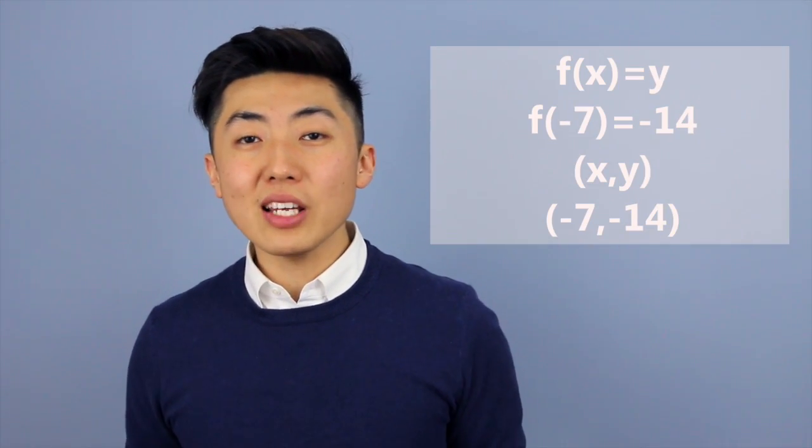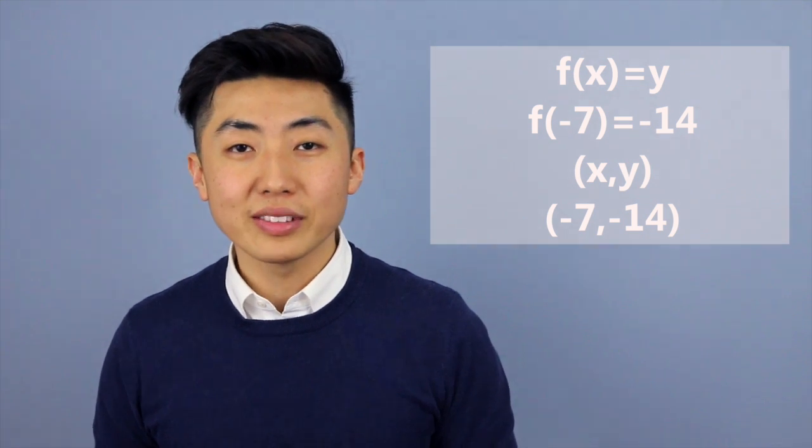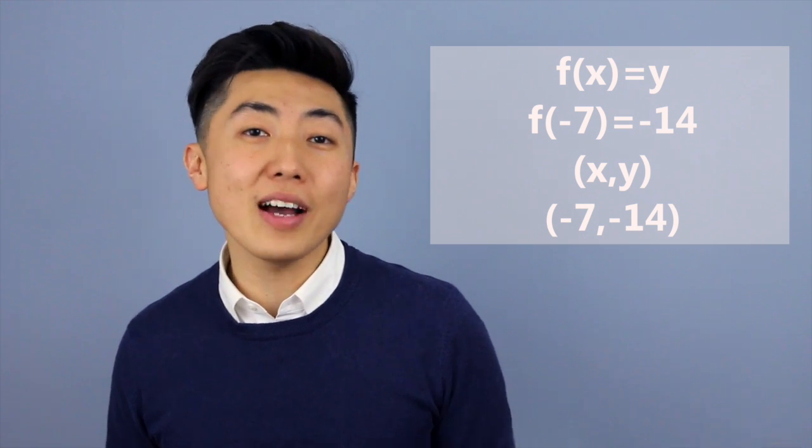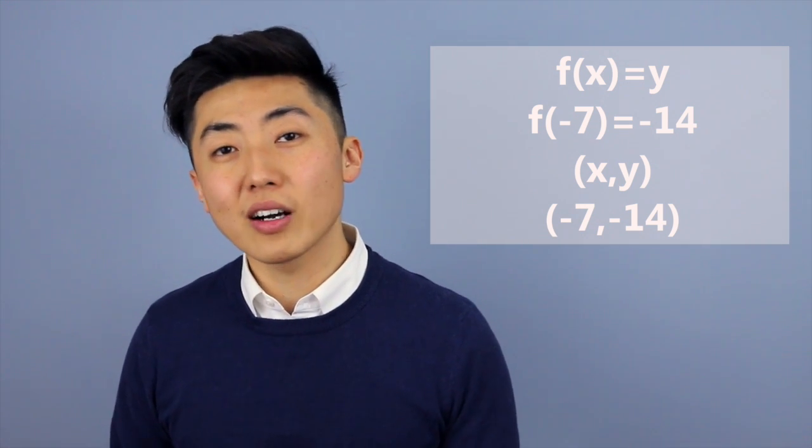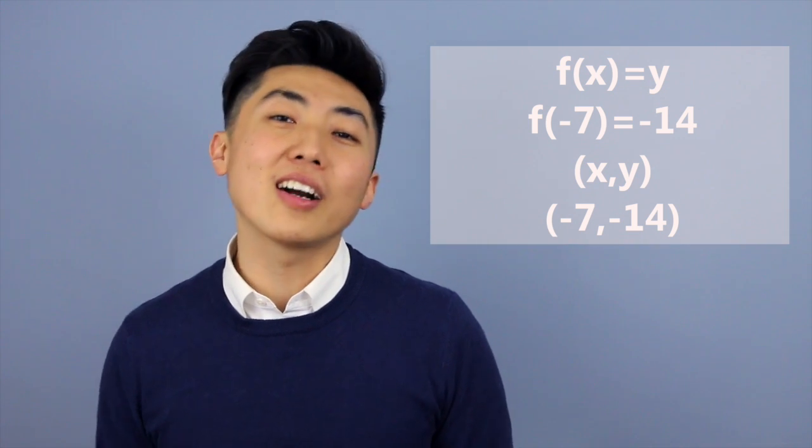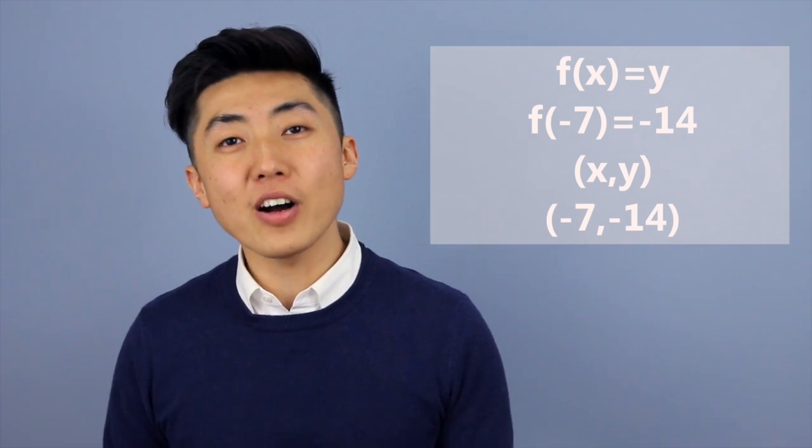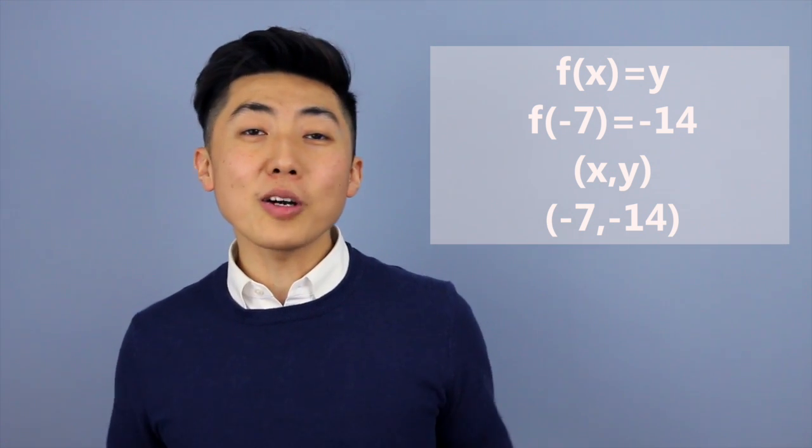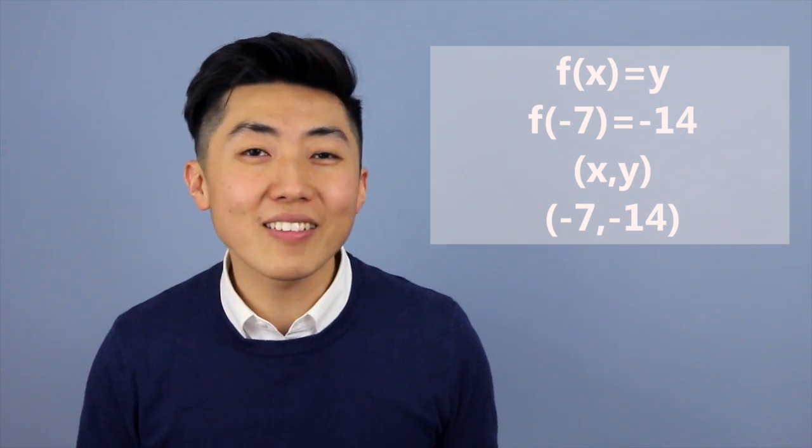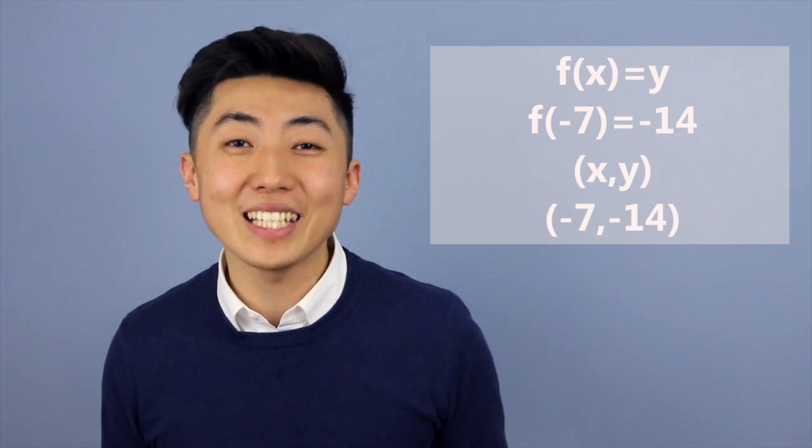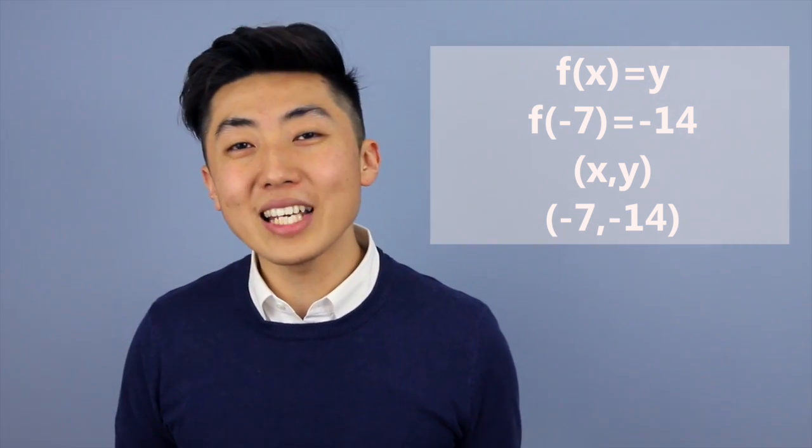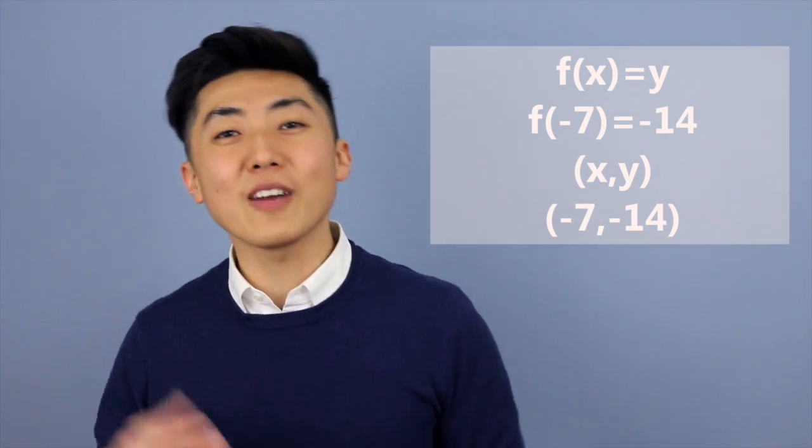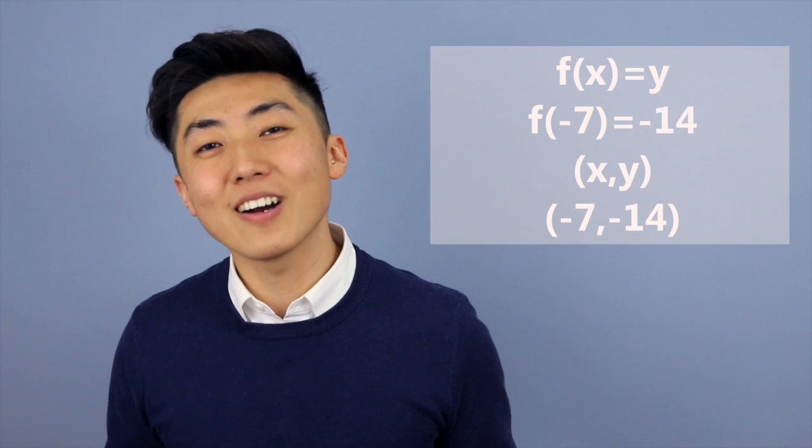So another way to express the same notation, instead of saying f of negative seven is equal to negative 14, is I could write this as an x and y value. Now, typically, our x values are our inputs and our y values are our outputs. So instead of writing this as f of negative seven is equal to negative 14, I could also write this as an ordered pair. And in an ordered pair, we just write x comma y. So in this case, negative seven comma negative 14. This all means the same thing. For any given input, we get a very specific output. For any particular x, we get a very specific y. This is our function.